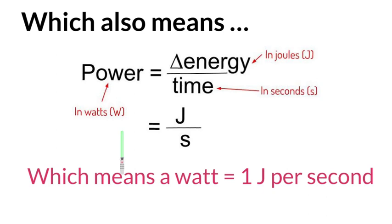Since we're measuring power in watts, energy in joules, and time in seconds, that means a watt equals one joule per second. That's something that's very useful to know.